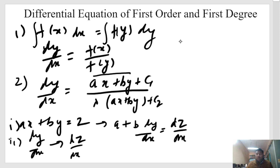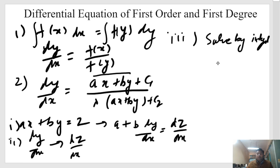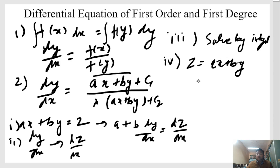Finally, we put this substitution and solve for dy/dx. After substituting and rearranging, the equation becomes solvable by direct integration. After integrating, we get the solution in terms of z, and then we replace z back as ax + by to get the final solution.